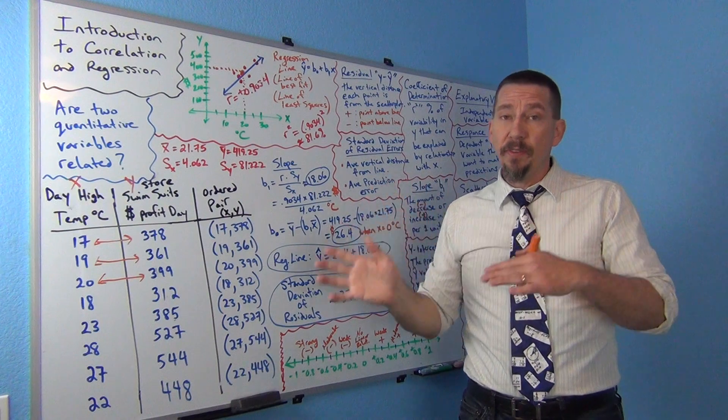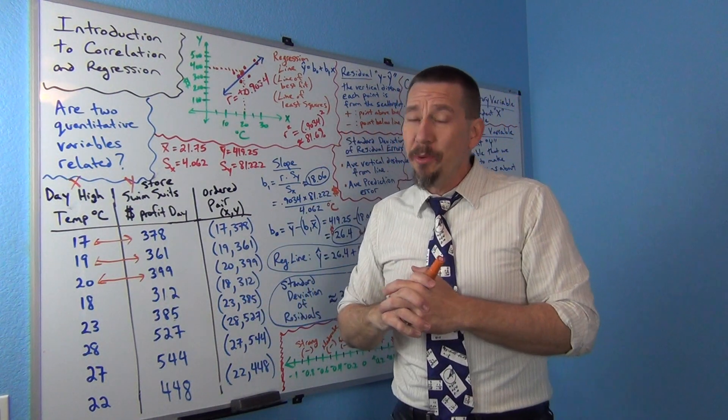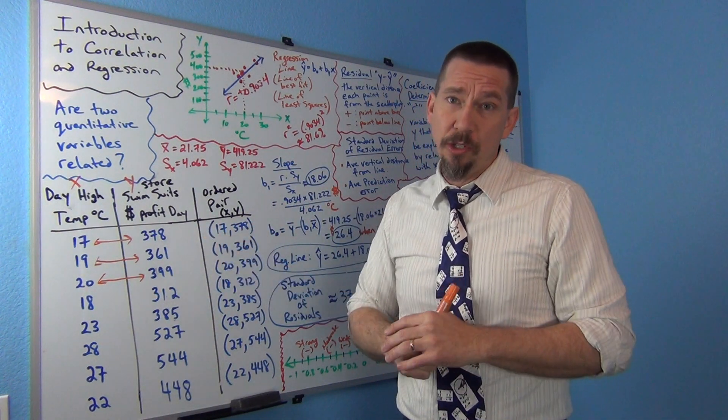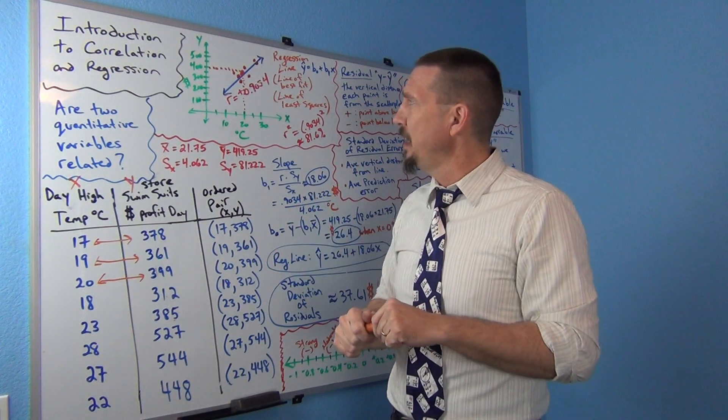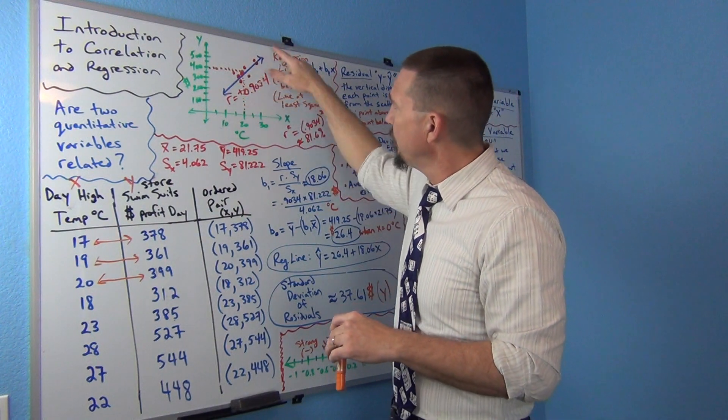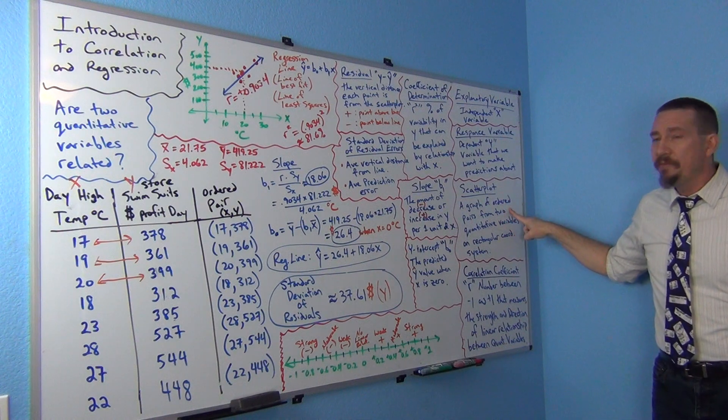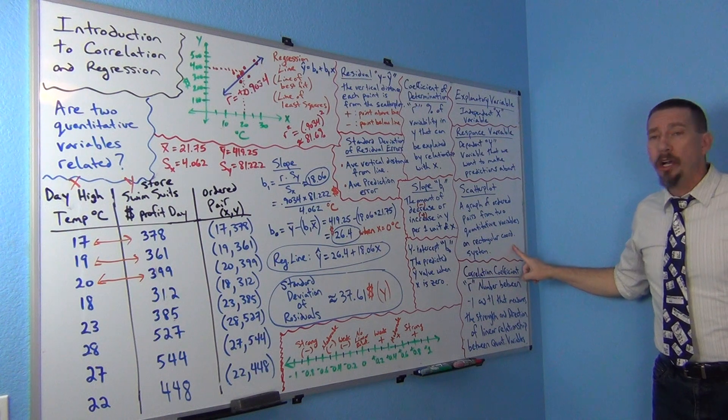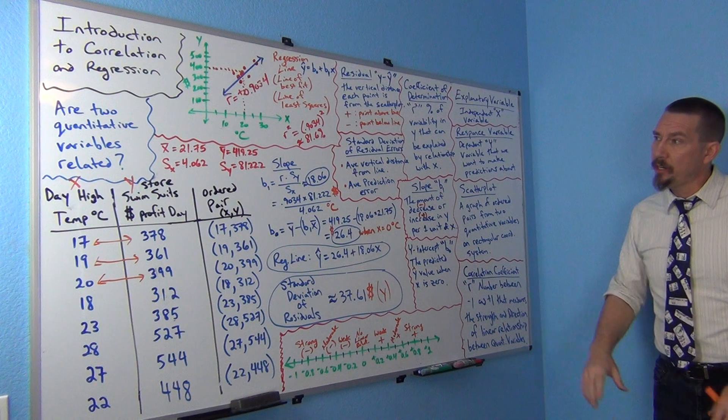So that's what we refer to as a scatter plot. The one thing that's different in stats than in algebra classes - a lot of times in algebra we're talking about two points, but usually in the real world we might have hundreds or thousands of ordered pairs that we're trying to figure out. So it's a lot more complicated in terms of how the calculation works in statistics. But this is called a scatter plot. I think I put the definition over here. A scatter plot is a graph of ordered pairs from two quantitative variables on the rectangular coordinate system.